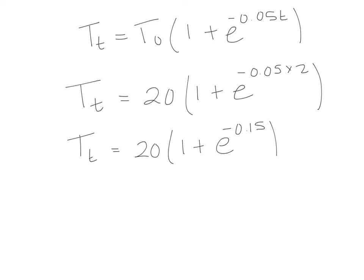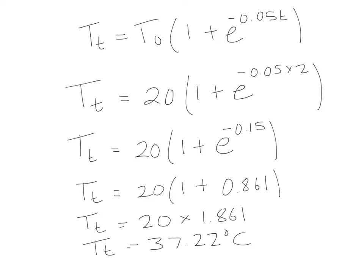And then into the calculator we would do e to the power minus 0.15. And we find that that is equal to 0.861. So we have 20 times 1 plus 0.861. So we have our time equal to 20 times 1.861.